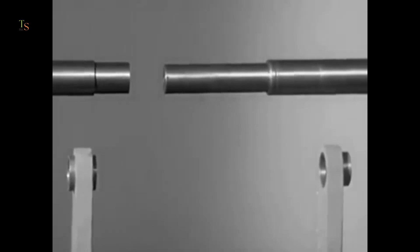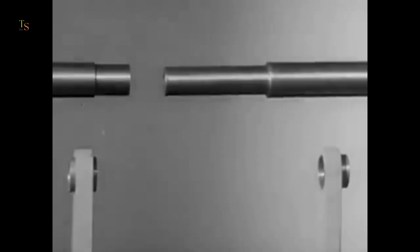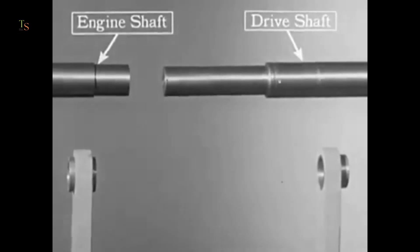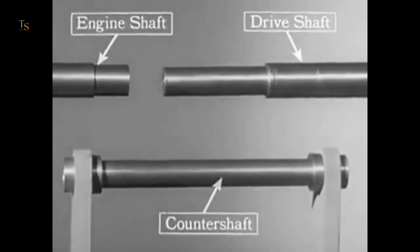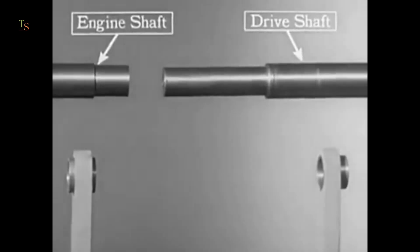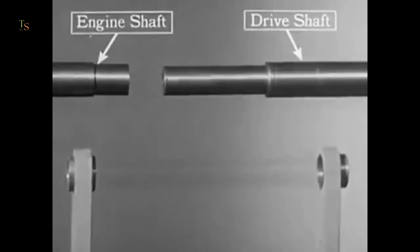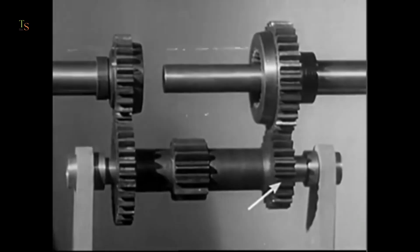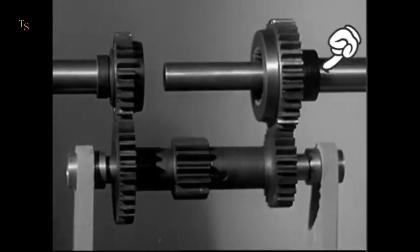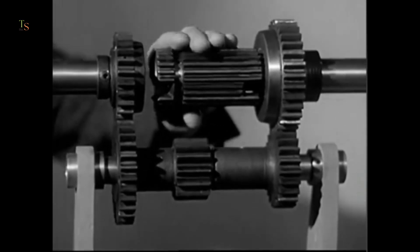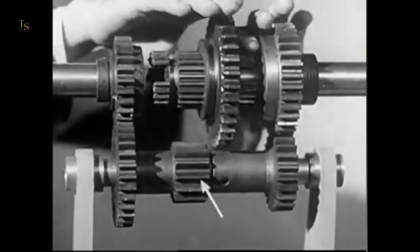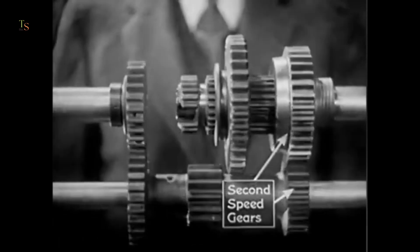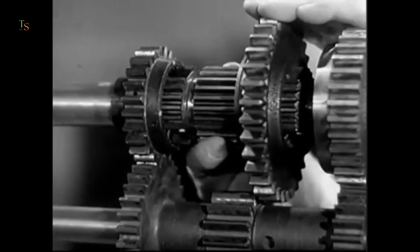Now let's get into the actual gearbox system. There are three main shafts in a gearbox: the engine shaft, which provides power; the drive shaft, which turns the wheels; and the countershaft, the middleman. You might wonder why not connect the engine shaft directly to the drive shaft? Because we need to control the vehicle's speed. In the gearbox, some gears are always in contact, but the gear on the drive shaft is initially free-spinning — like that friend who looks busy but never actually helps. It just shows off by spinning without doing any real work. Only when the clutch sleeve engages it does it start transferring power to the wheels. To increase speed, we shift to higher gears, eventually connecting the engine shaft directly to the drive shaft using top gear.